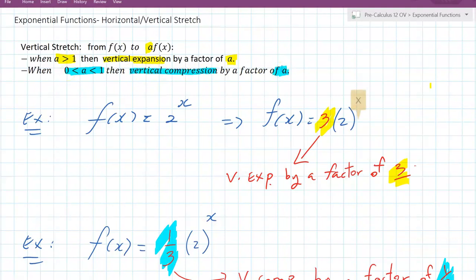Okay, and these are the two examples. If you have 2 to the x, that's the original function right here, 2 to the x. And if you have f of x equal to 3 times 2 to the x, notice that this 3 is greater than 1. So that would be vertical expansion by a factor of 3. That means every single y-coordinate, y-value of the original graph, it will be tripled.